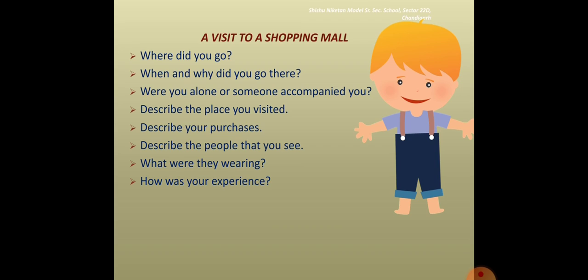Third, were you alone or did someone accompany you? Fourth, you need to describe the place you visited — tell in brief about the place, describing its beauty, what you saw there, and whatever things attracted your attention. Next, describe your purchases — the things you bought from there. Then describe the people that you see; whenever we go out, we see a number of people, so describe them and tell something about them.